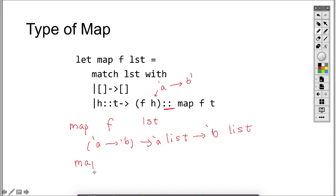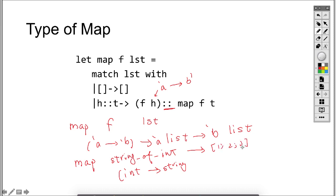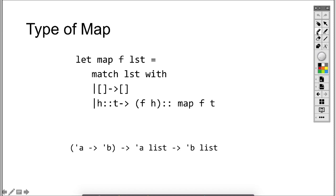For example, if you call map with string_of_int — this function takes an integer and returns a string — and then if we give a list of [1, 2, 3], this is an int list, the entire thing will return a string list of ["1", "2", "3"]. Therefore, the type of the higher-order function map is: it takes a function of type 'a -> 'b, it takes another 'a list, and then it applies this function to every member of the list and eventually generates a 'b list.